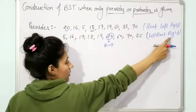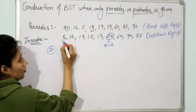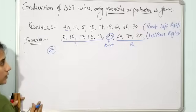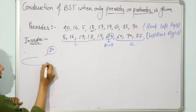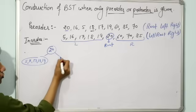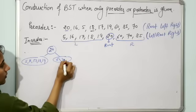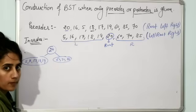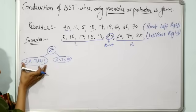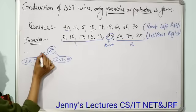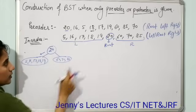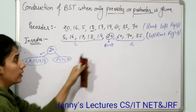So 20 is the root. To the left of this root we have the left sub-tree, and to the right we have the right sub-tree. In the in-order, to the left of 20 we have 5, 16, 17, 18, and 19 — these form the left sub-tree. And to the right of 20 we have 60, 70, and 85, which form the right sub-tree. Now suppose we go to the left sub-tree first.